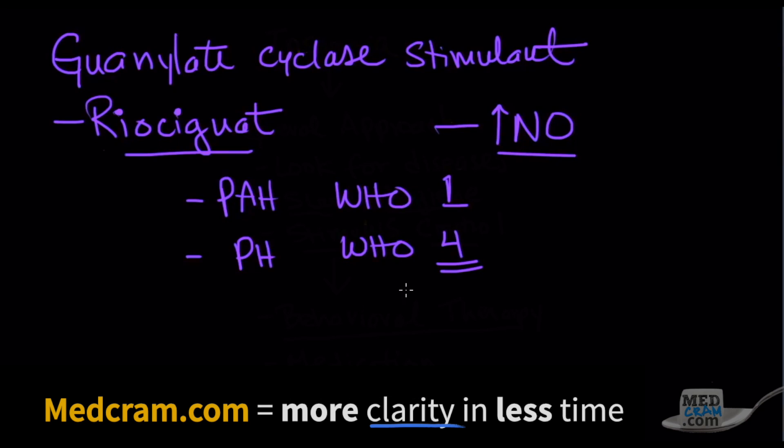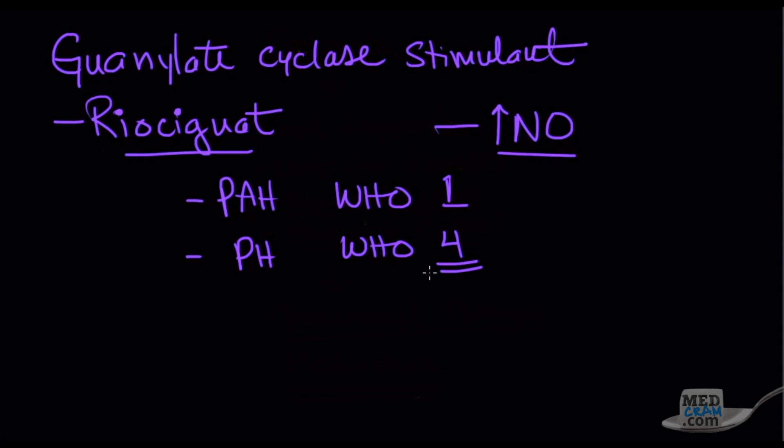Now, all of the medications that we've just talked about can be used in combination. But you've got to be careful, make sure that you are using these in combination after you have done a right heart cath and made sure that they are not reactive. So you could add, for instance, tadalafil and ambrisentan. You could use sildenafil and bosentan.